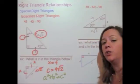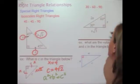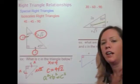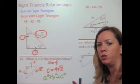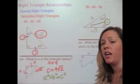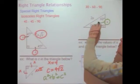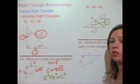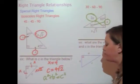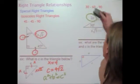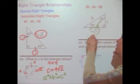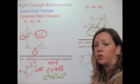In a 30-60-90 triangle, the relationship is a little different. The side across from the 30-degree angle is our base side — we call it x. If that side is x, then the hypotenuse (across from the 90-degree angle) is 2x. And the side across from the 60-degree angle is x times the square root of 3.